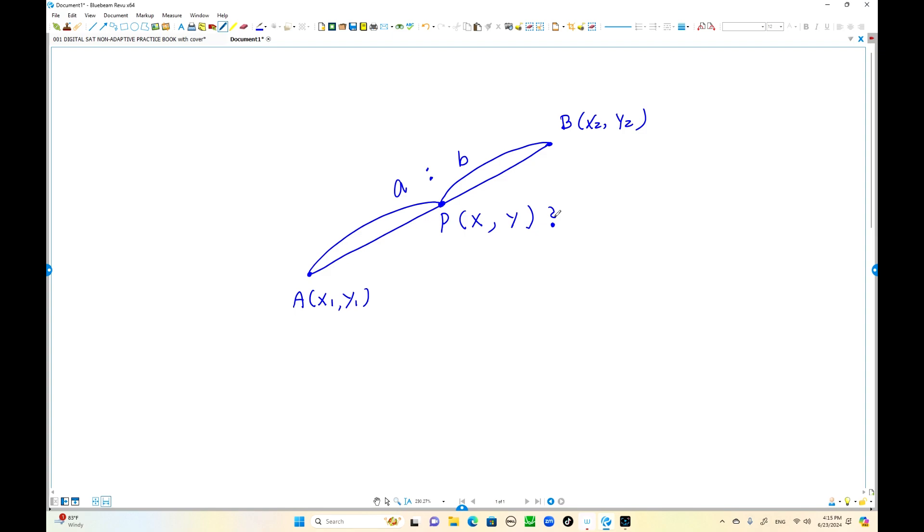We already got the answer. x is B x1 plus A x2 over A plus B. And y equals B y1 plus A y2 over A plus B. That's the formula we already know. So we're going to prove this one.